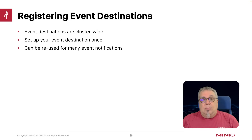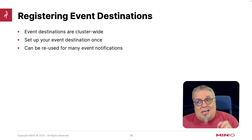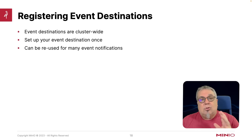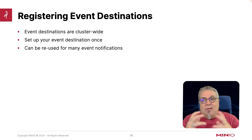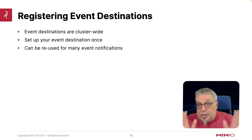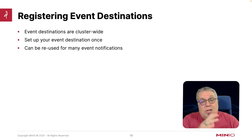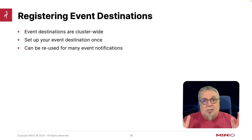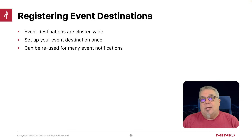An event destination — whether it's a webhook, a database, or a queue — these are cluster-wide. So you're going to set up your event destination once, and then you can reuse that for many different event notifications from various buckets.